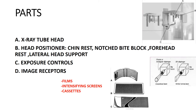The image receptor consists of films, intensifying screens, and cassettes. Panoramic films are available in two sizes: 5×12 inch or 6×12 inch. The film is placed between two intensifying screens in a cassette holder. Intensifying screens increase the intensity of radiation on the film for a better image. There are two types: a calcium tungstate screen which emits blue light, and a rare earth screen which emits green light.